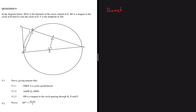It also says that EB is a tangent, so let's write that down. We know we have the tangent theorem, and where the tangent and the radius meet we have an angle of 90 degrees.